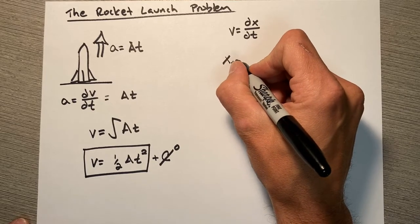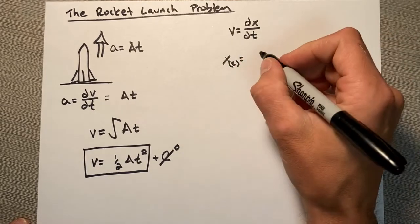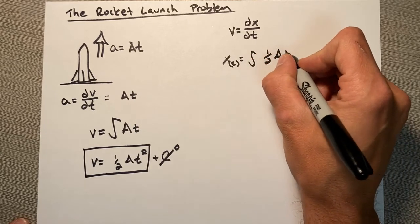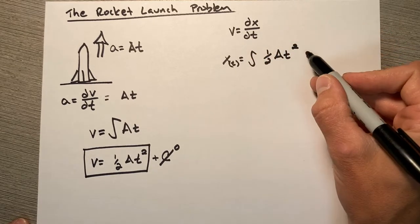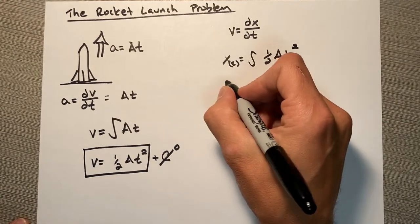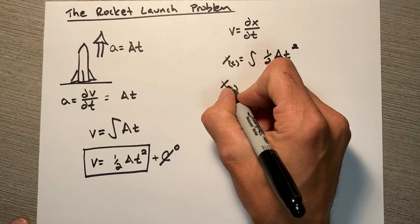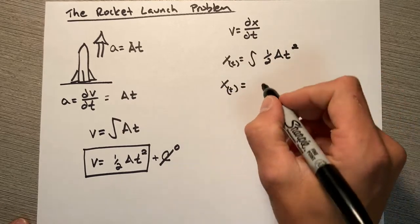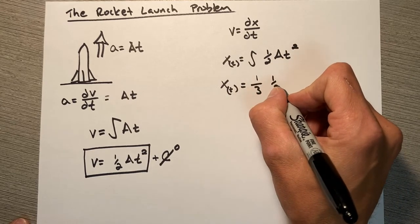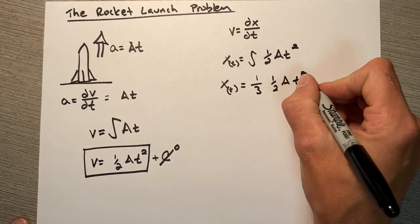So position as a function of time is going to be the integral of one half A t squared. We don't need to put in plus zero—it's not going to be a relevant term. So our position as a function of time, just using the chain rule, we're going to have one third times one half A t cubed plus c.